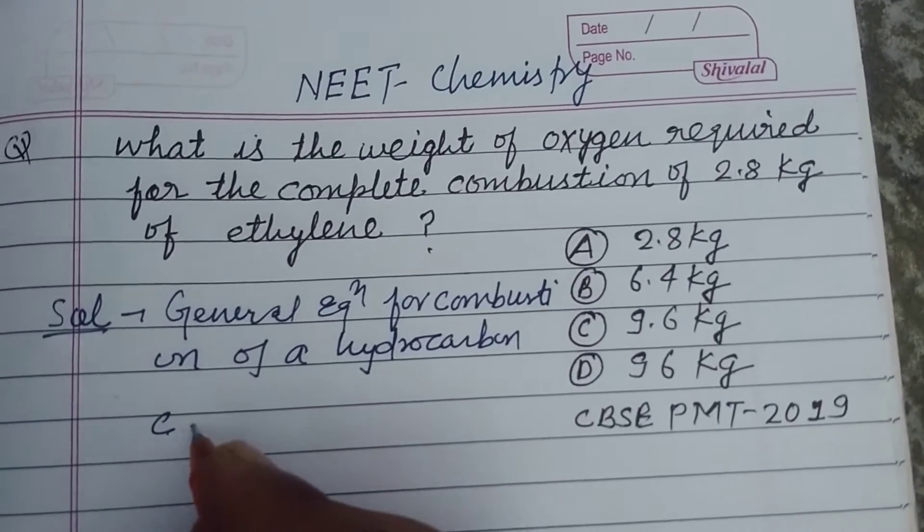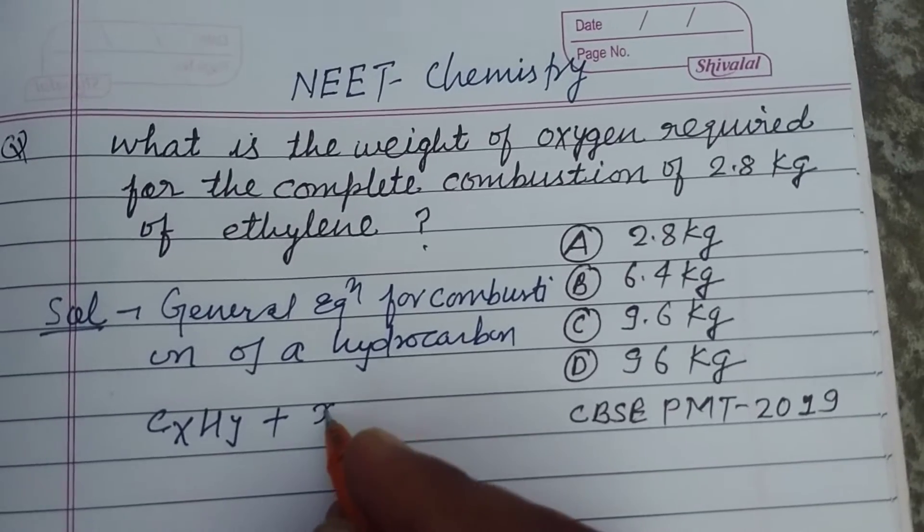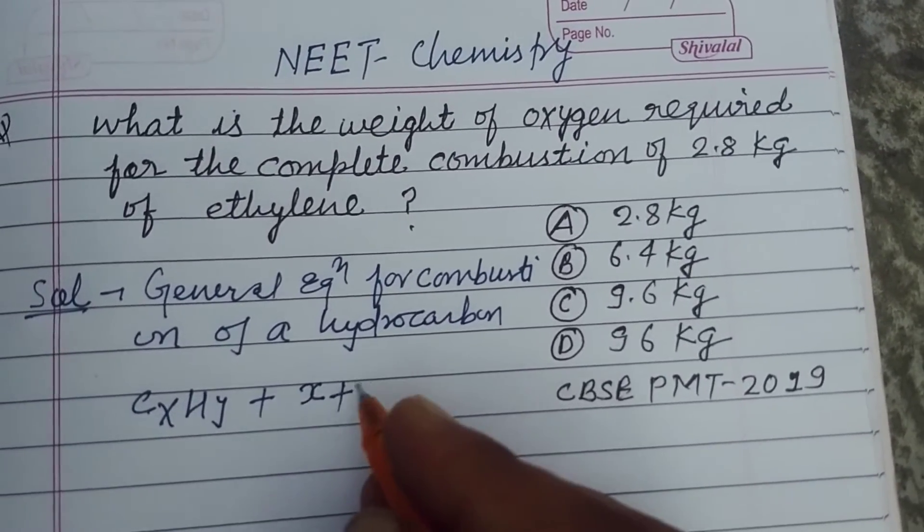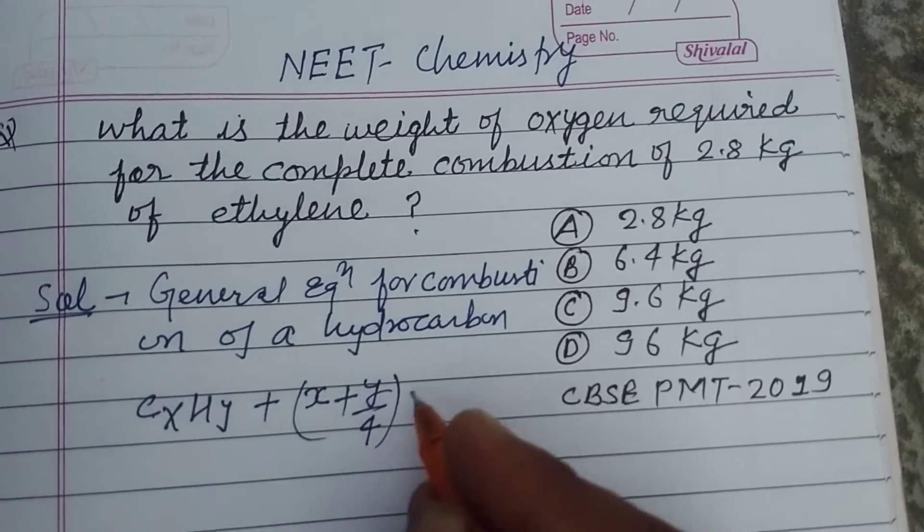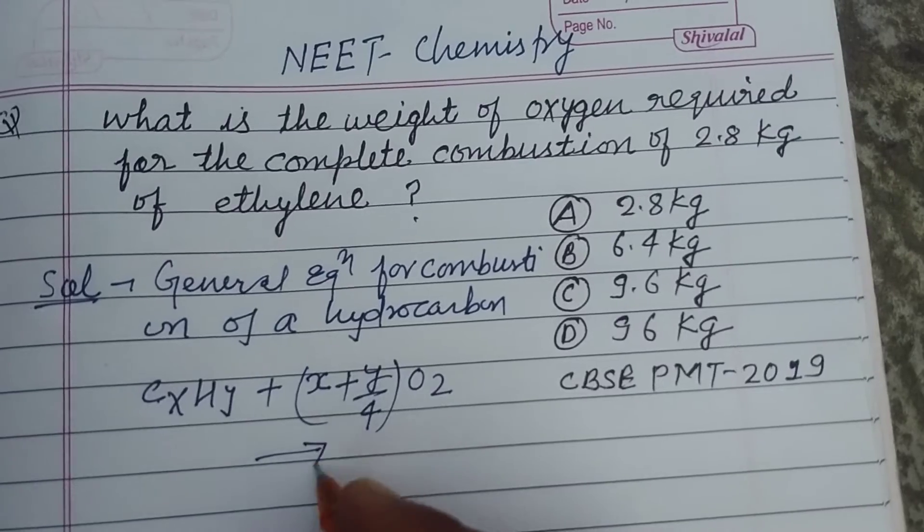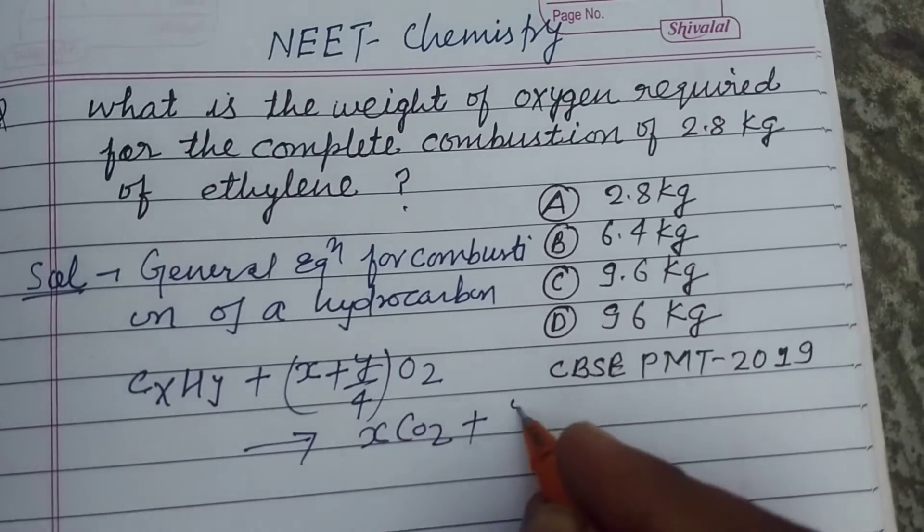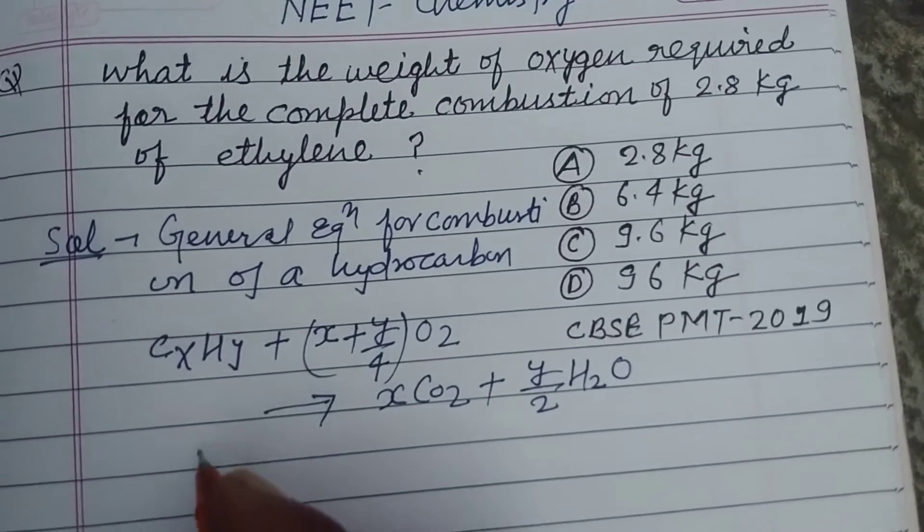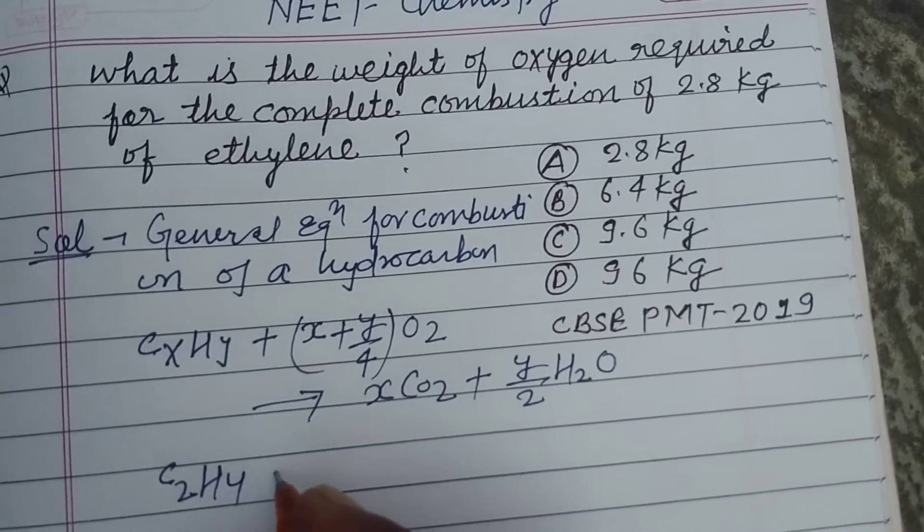So this is CxHy, any hydrocarbon. The number of moles required of oxygen is x plus y/4. O2 gives x CO2 plus y/2 H2O. So if here is ethylene, then C2H4 plus...